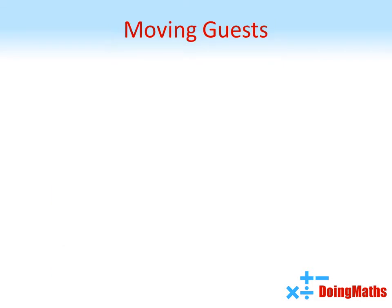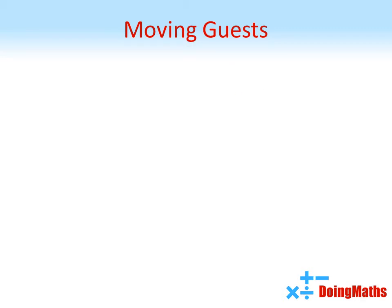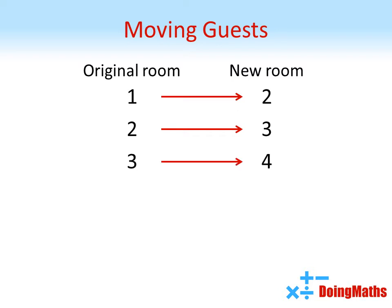The manager asks each of the current guests to move up one room. So the guest in room 1 moves to room 2, the guest in room 2 moves to room 3, and so on. Algebraically, the guest in room n will move to n plus 1. We can do this because, as there are an infinite number of rooms, there will always be a higher numbered room for any guest to move into.